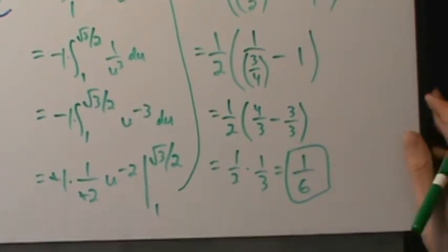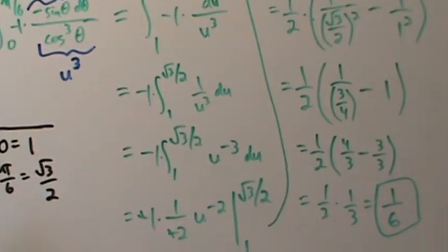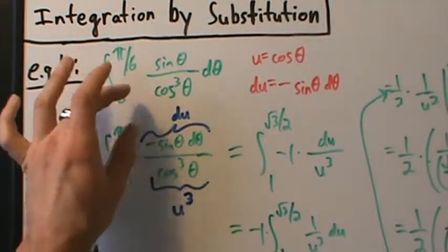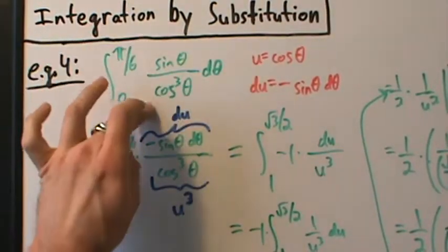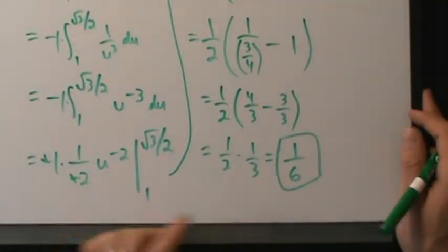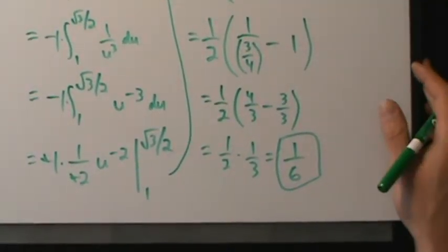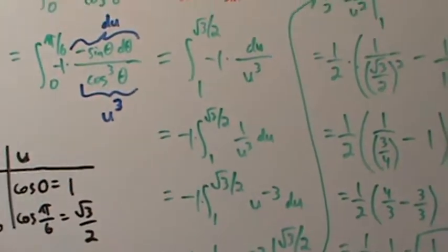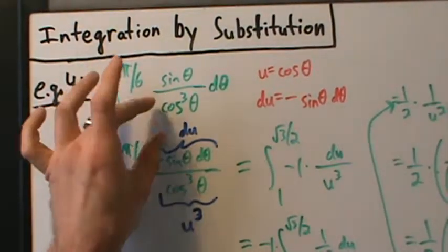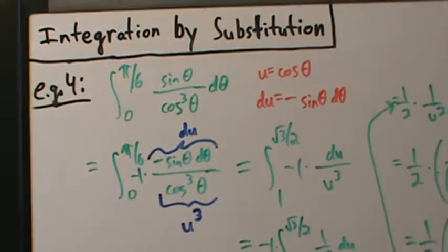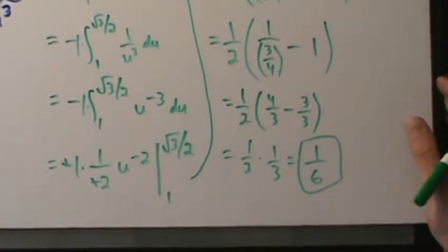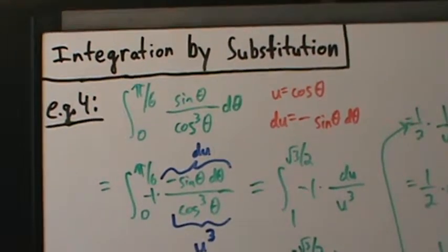So that's example 4. It's kind of crazy, right? The integral from 0 to pi over 6 of sine of theta over cosine cubed of theta d theta actually has this really simple answer: 1 sixth. Sometimes that'll happen with integration — you might have something that looks fairly complicated, and you might not expect right away that the answer is something so simple. But that's kind of cool. That's example 4, integration by substitution.